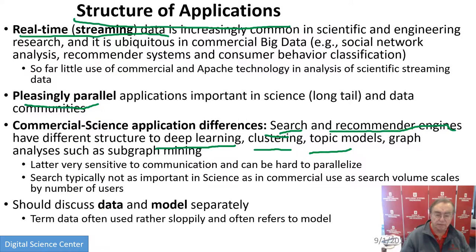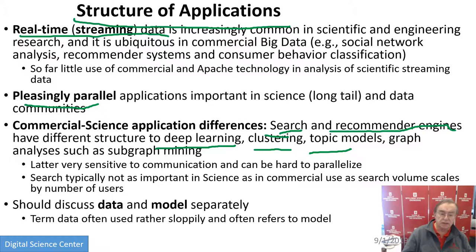The difference is also seen in terms of hardware needs. Search and recommender engines, and pleasingly parallel jobs, do not need lots of communication, whereas things like subgraph mining are very communication-sensitive and pretty hard to get an efficient algorithm for. We need to discuss data and model separately.